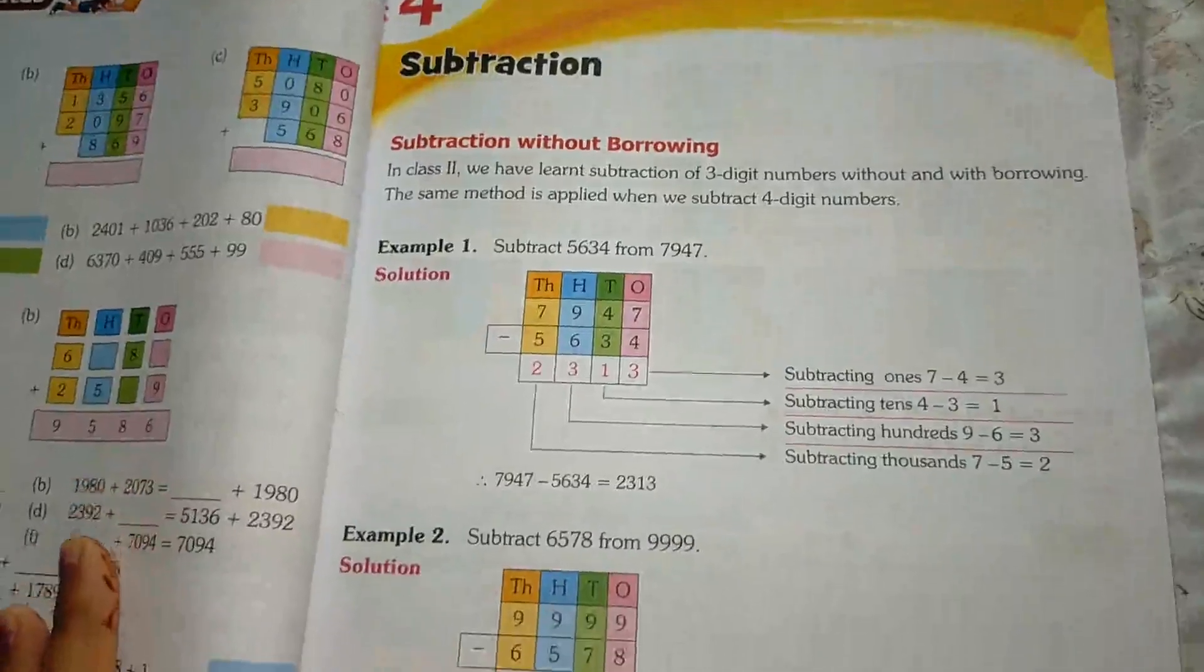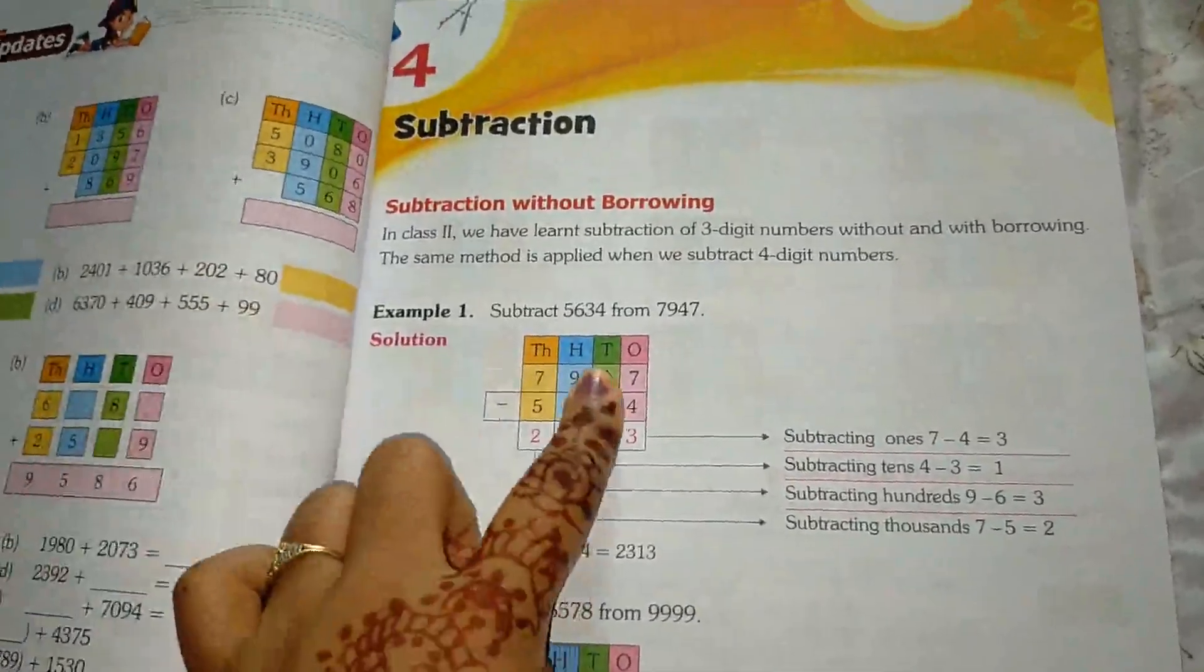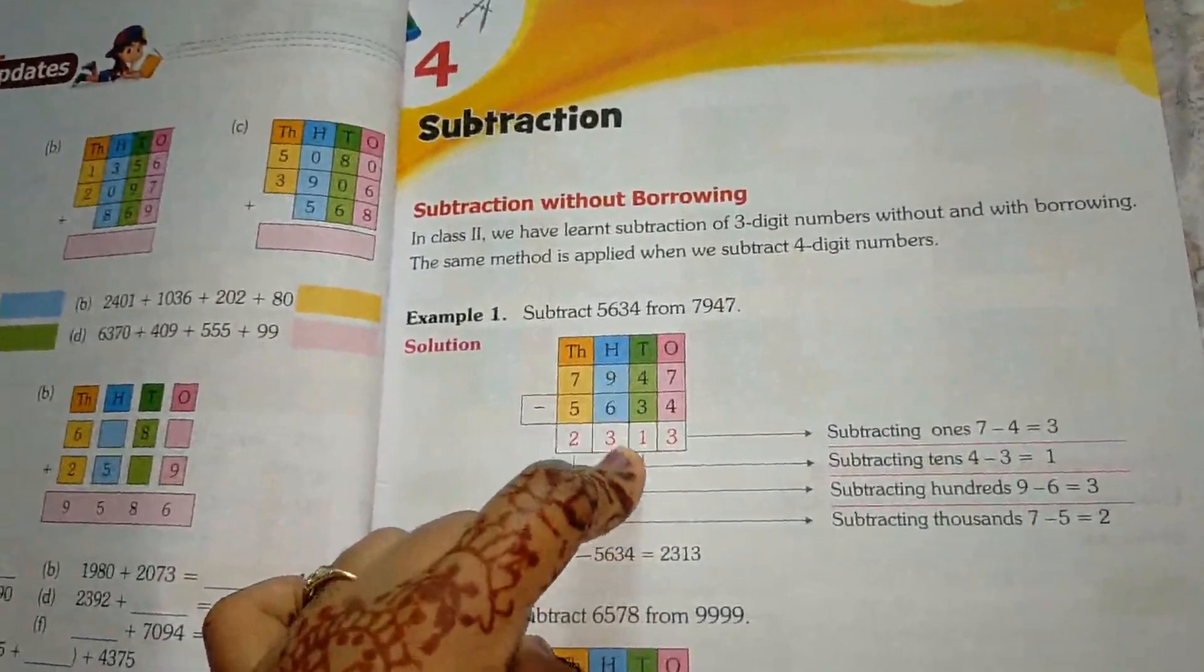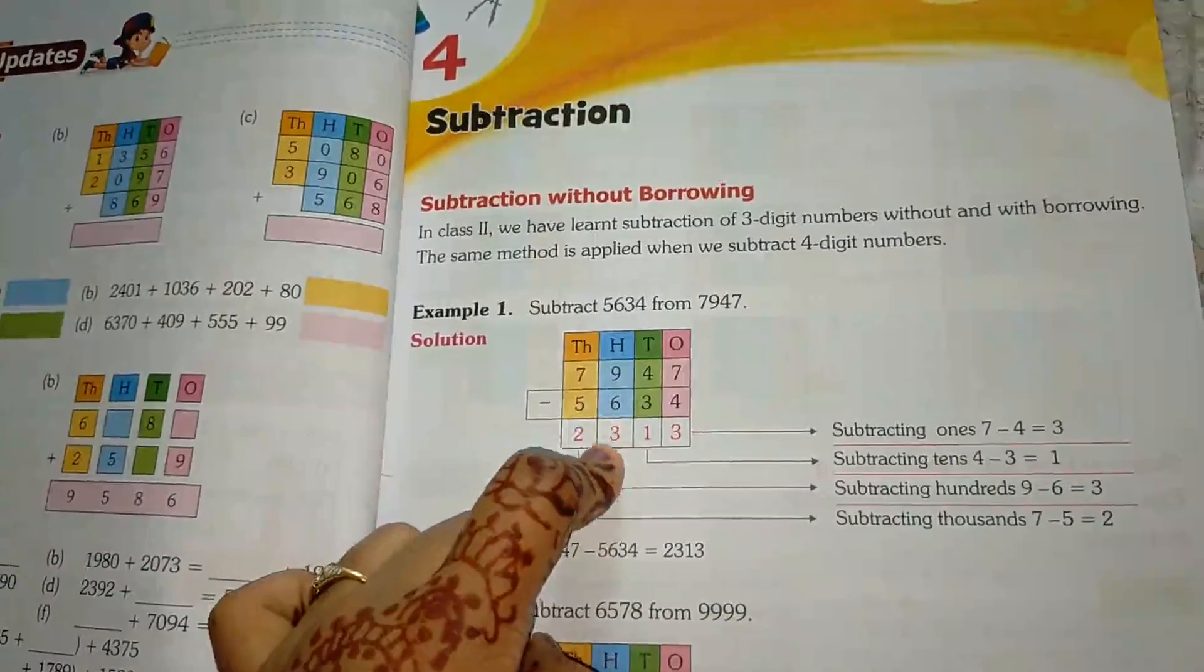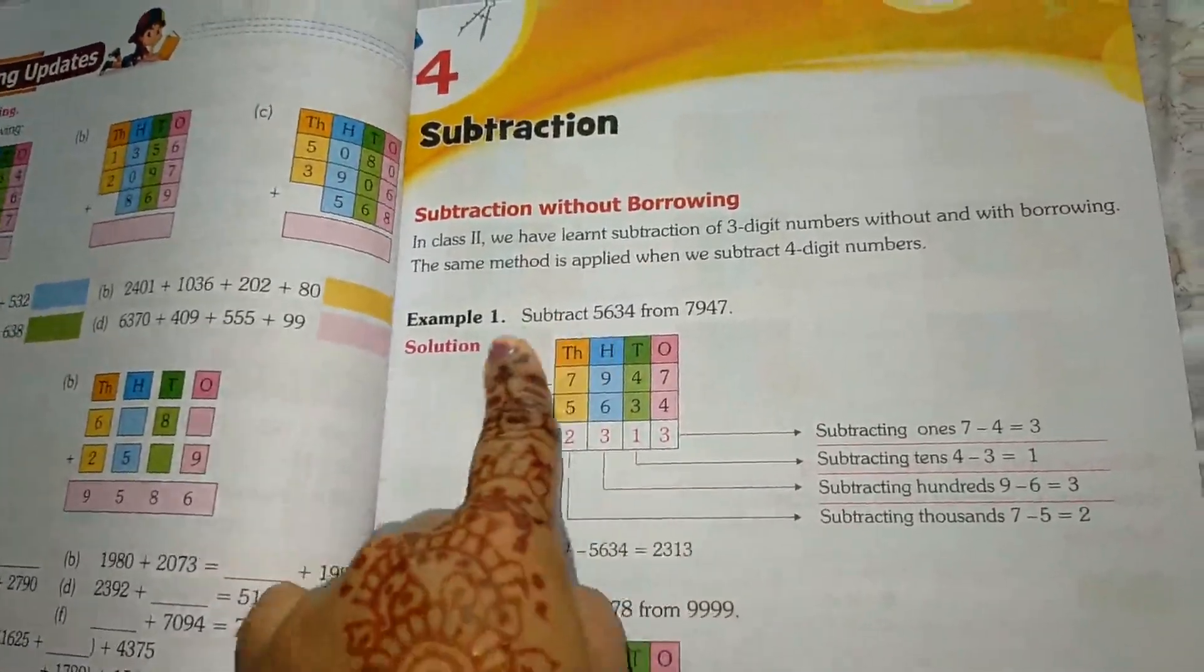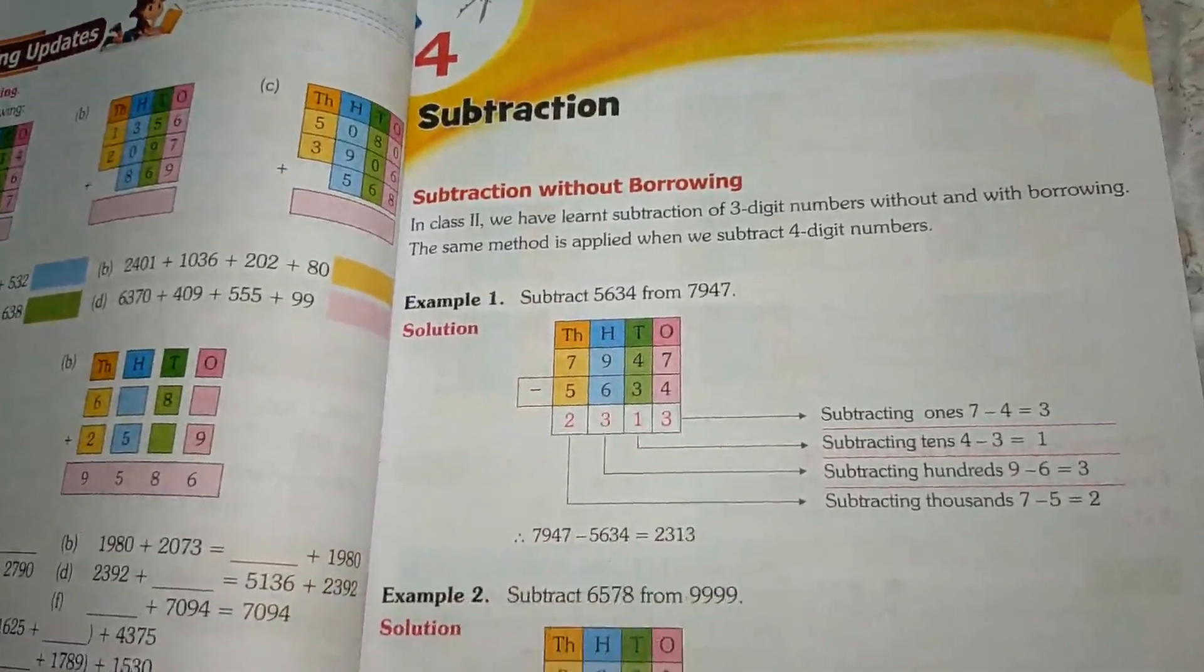Here is an example of how to do subtraction. Suppose 7 minus 4 is 3, 4 minus 3 is 1, 9 minus 6 is 3, 7 minus 5 is 2. In this way you have to do the subtraction.